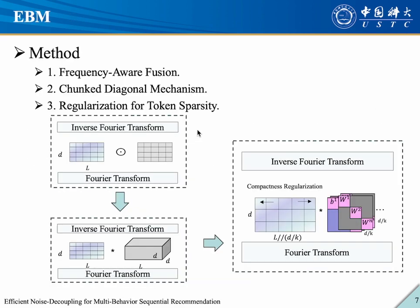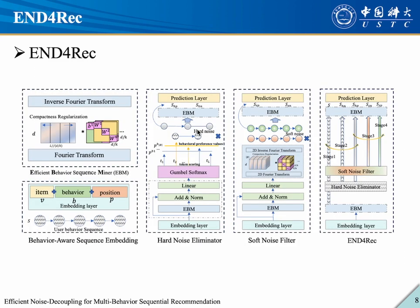To address these issues, firstly, we propose an Efficient Behaviour Sequence Miner (EBM) module. Further, we propose two denoising modules — hard noise eliminator and soft noise filter — and introduce a technique called noise decoupling contrastive learning with a guided training strategy to remove noise effectively while preserving important user interests.